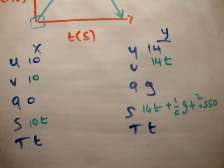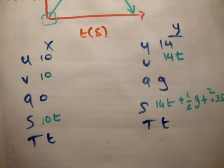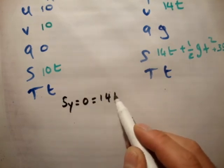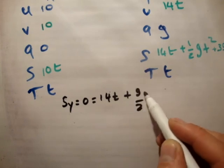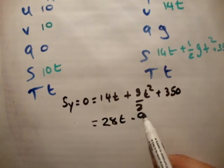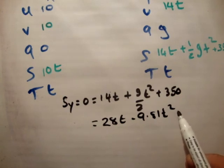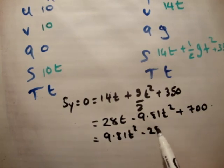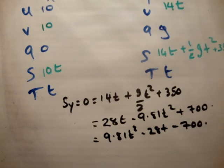So what are we asked to do in the equation? Find the distance from the foot of the cliff when the ball hits the sea. So when does it hit the sea? If it hits the sea, then its height is equal to 0. So you want to find the time when the height is equal to 0. So s sub y equals 0 equals 14t plus g over 2t squared plus 350. So that is equal to 28t minus 9.81t squared plus 700.